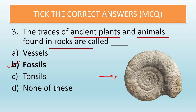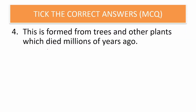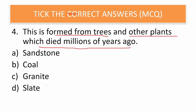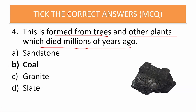Fossils are the traces of ancient plants and animals found in rocks. The next question is: this is formed from trees and other plants which died millions of years ago. Options are sandstone, coal, granite, or slate. The correct answer is coal. Let us tick mark coal.